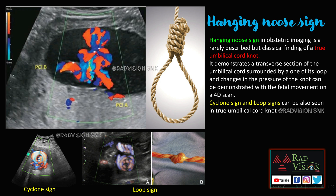Other signs you can remember are the cyclone sign and the loop sign, which can also be seen in true umbilical cord knot. Whenever you see this true hanging noose sign, the changes in pressure of the knot can be demonstrated with fetal movements on a 4D scan.